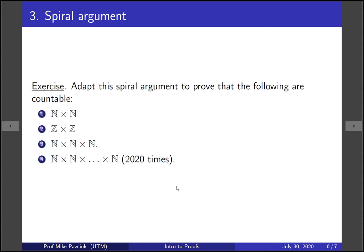Okay now to get a better sense of this spiral argument adapt it to prove that the following sets are countable: the naturals cross the naturals, the integers cross the integers, the naturals cross the naturals cross the naturals so all triples of natural numbers, and then once you can do that then prove that the 2020 product, the 2020 dimensional lattice, is also countable. This one sounds fancy but if you can do number three then you can do four and if you can do one you can do three.